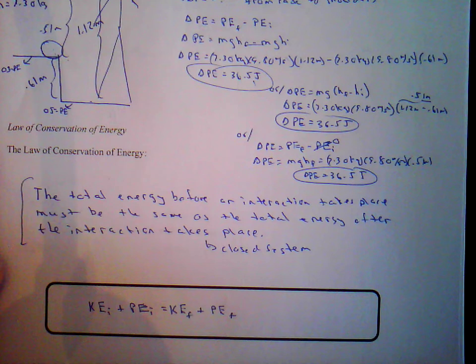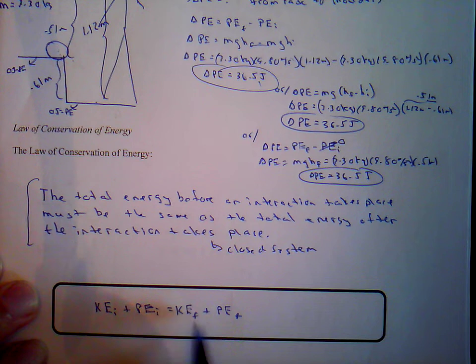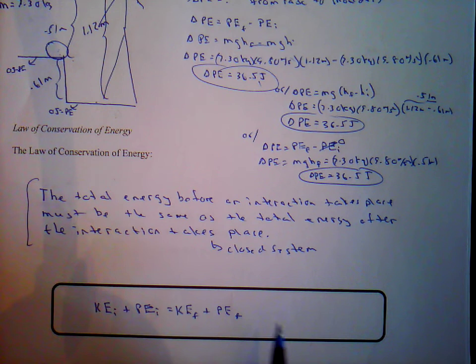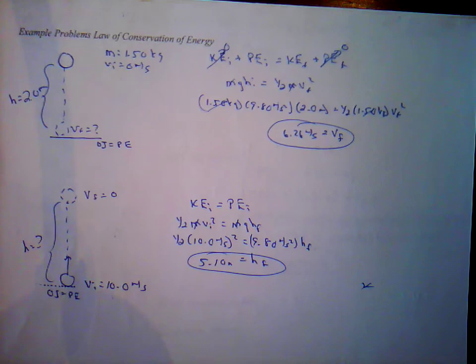We have the law of conservation of energy, where the total energy something starts with — both kinetic and potential — equals the final energy after an interaction takes place, both kinetic and potential energies. We're going to do some example problems of how these energy relationships are used to solve problems. We did this simple problem where we have an object falling a certain height.